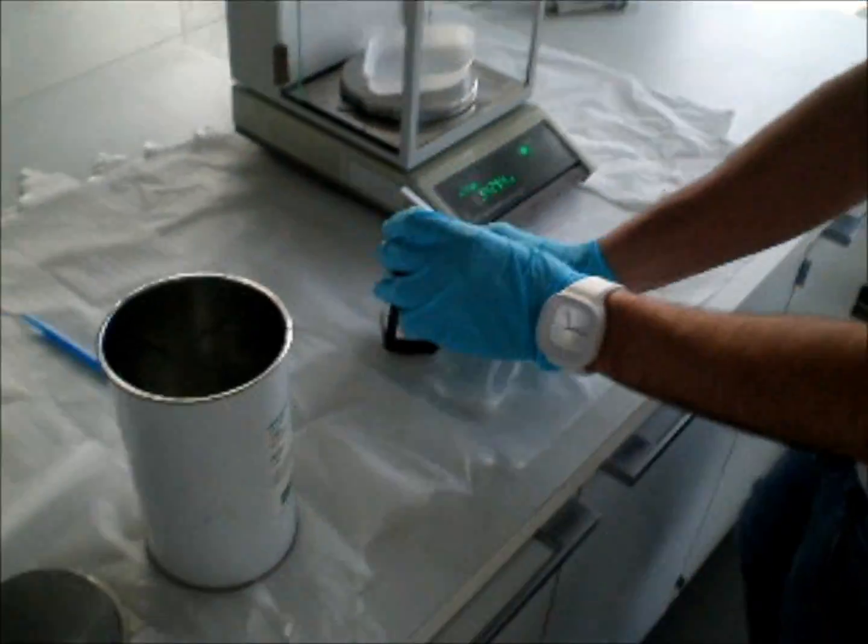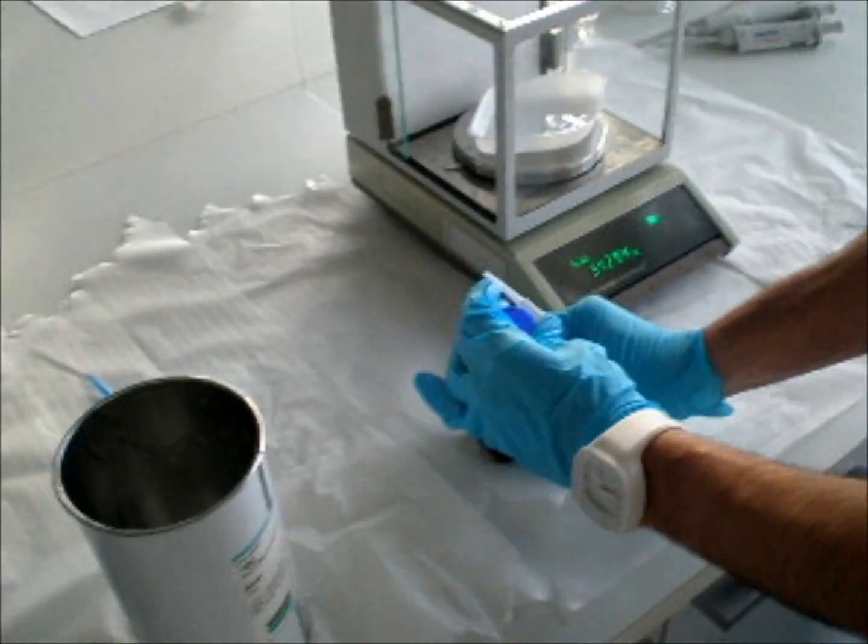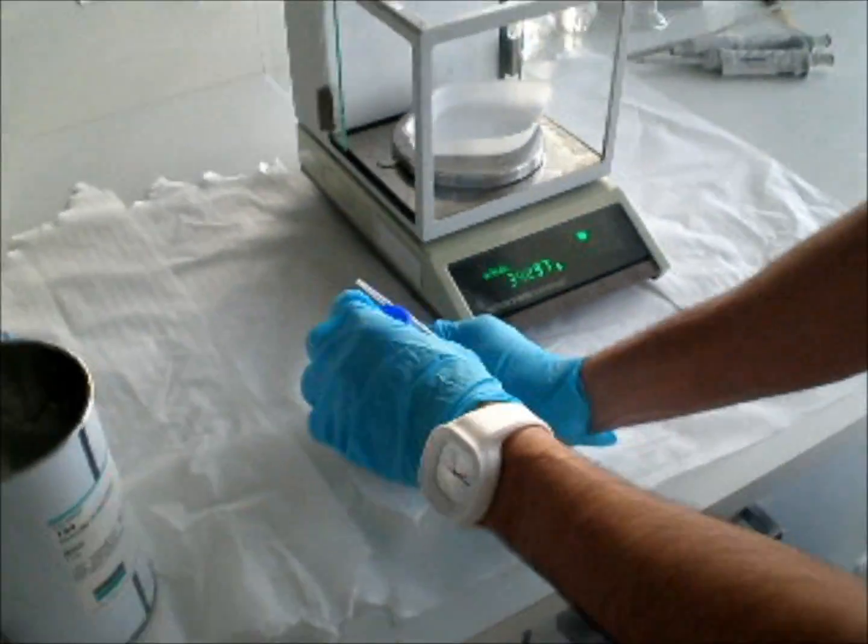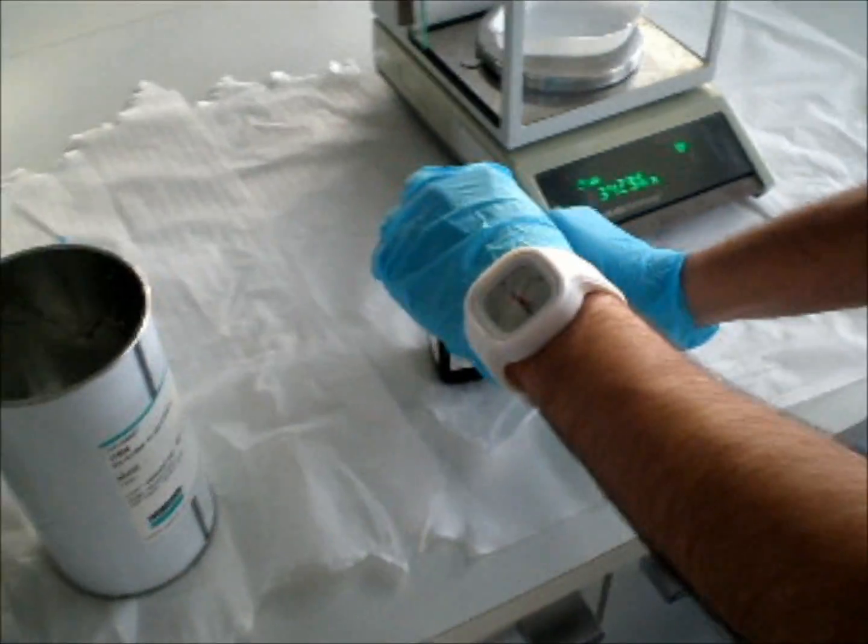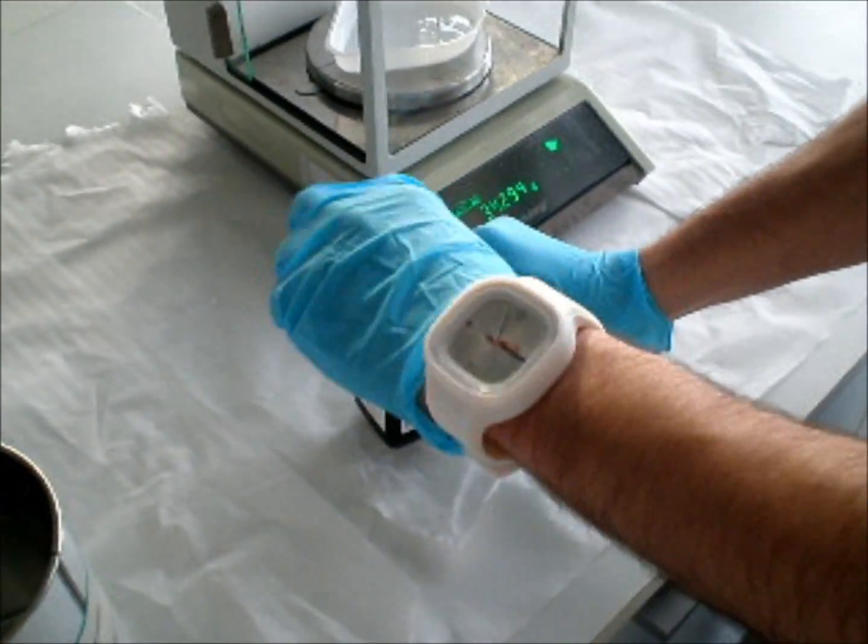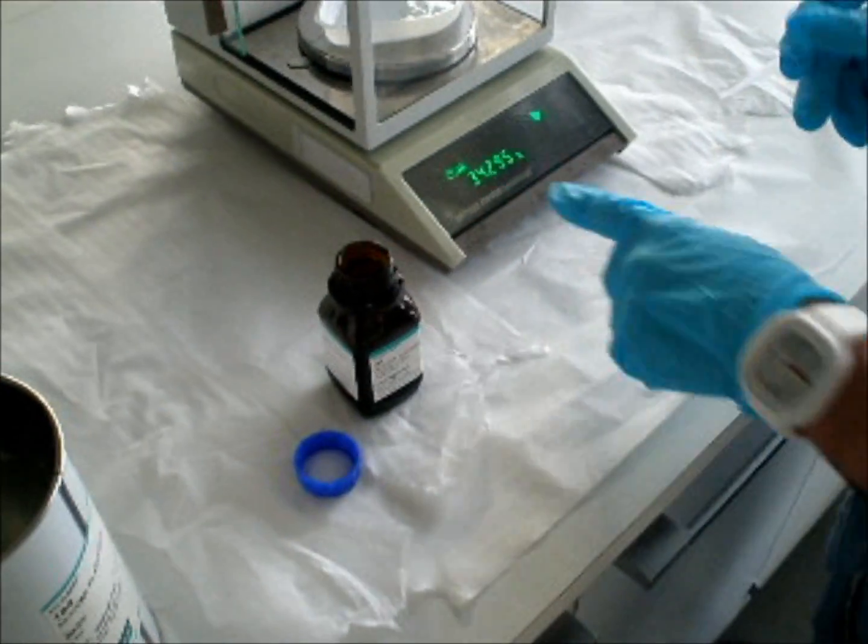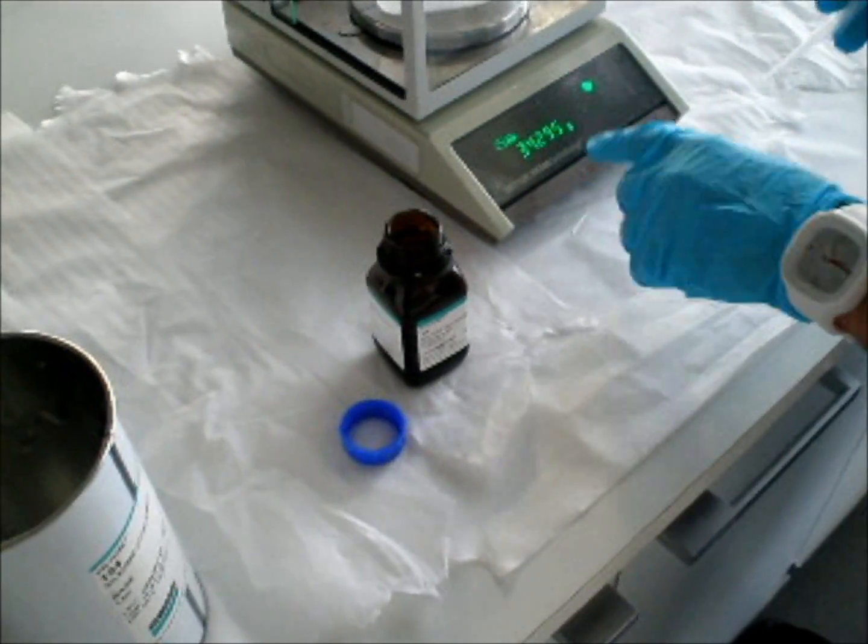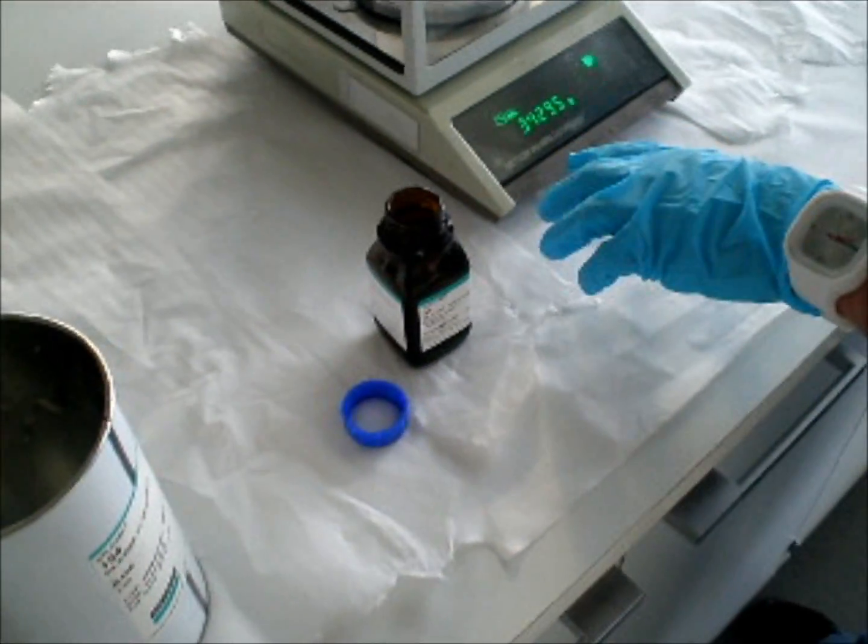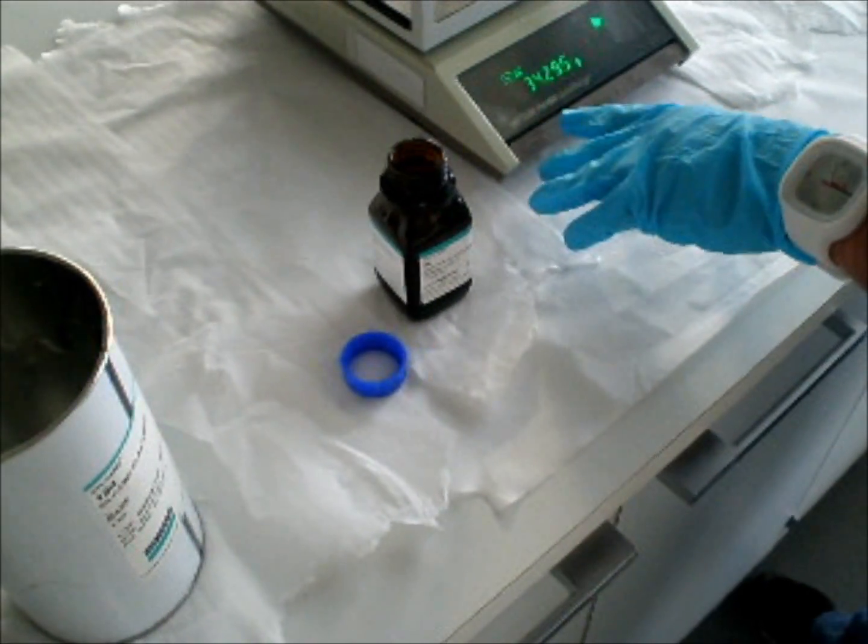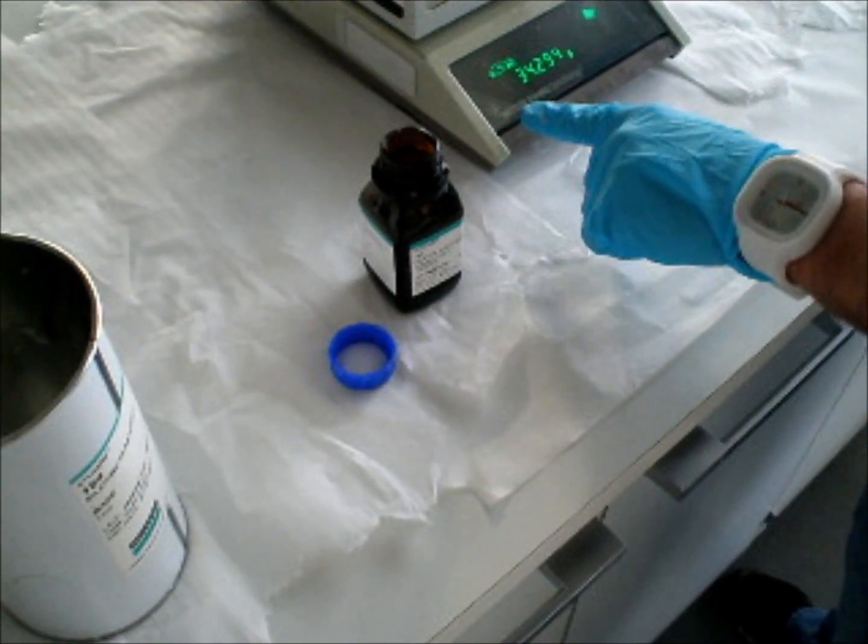So, we will put hardener. For 31 grams, 1 gram of hardener. For 34 grams we will put 3 grams hardener.